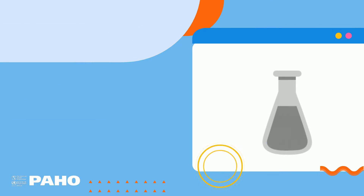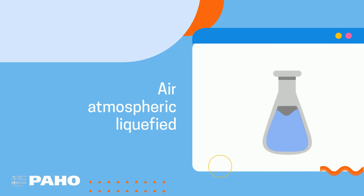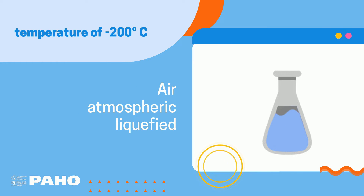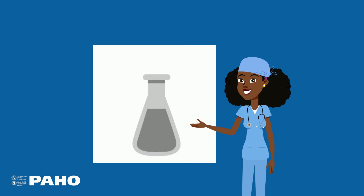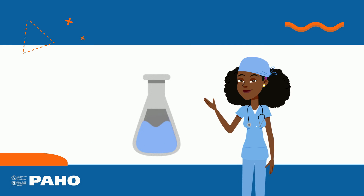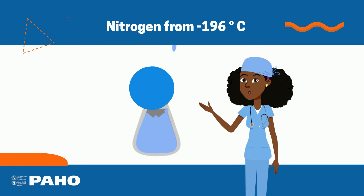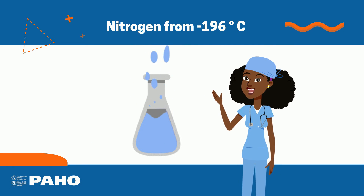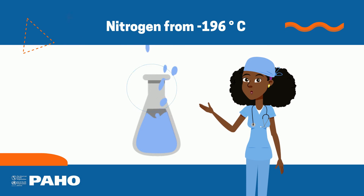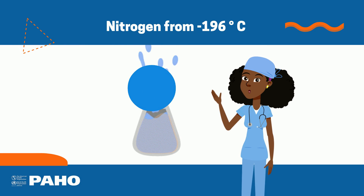Imagine that you have successively compressed and cooled the air, so that you have a good amount of liquid air stored in a tank at a temperature of minus 200 degrees Celsius. When the liquid air mixture is heated and reaches a temperature of minus 196 degrees Celsius, the nitrogen in it begins to boil and vaporize out of the mixture.